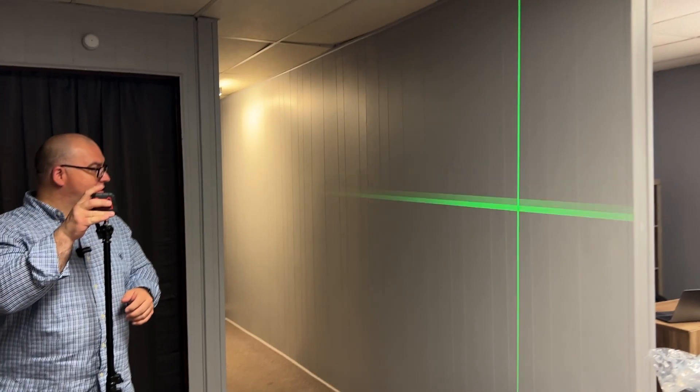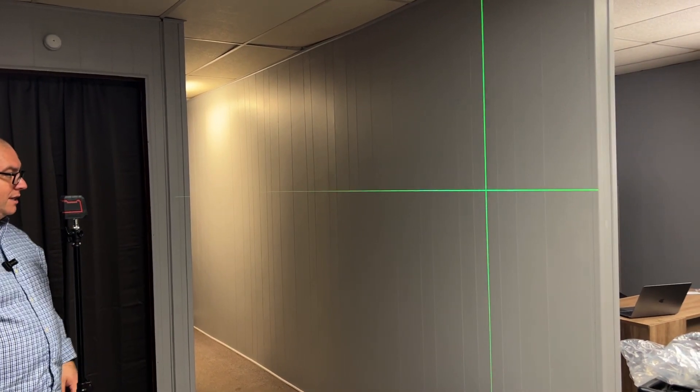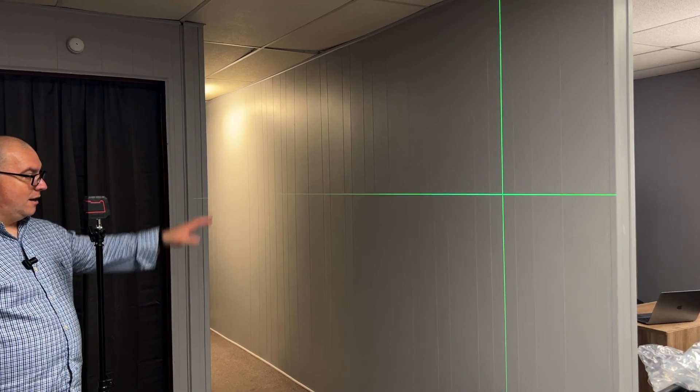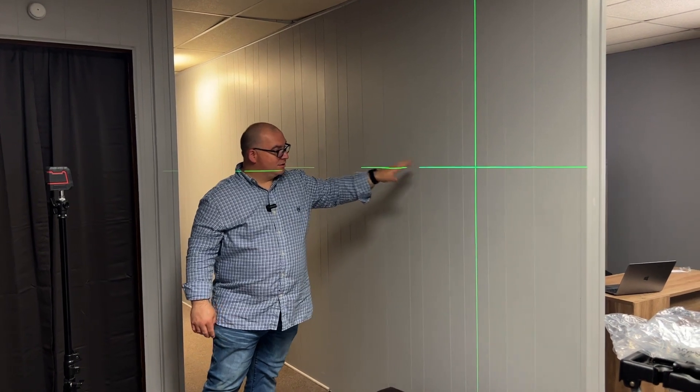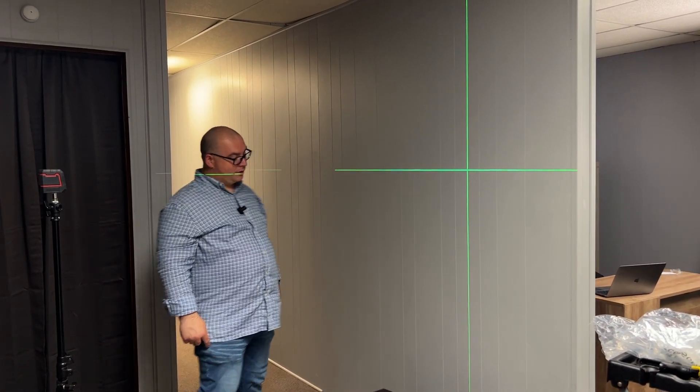We're going to go ahead and change it to the self-leveling mode and you can see it shakes a little bit. Now we know that this horizontal and vertical line both are actually level. So I think that is pretty cool.